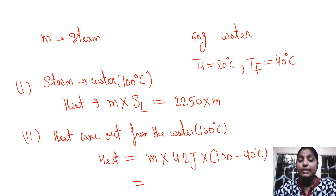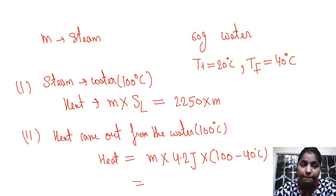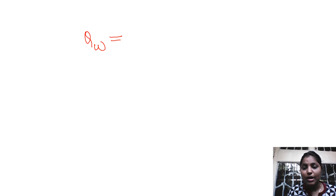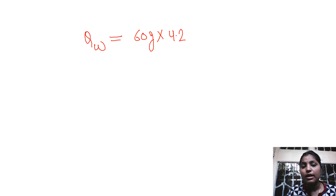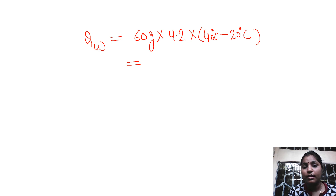Now we will calculate the heat absorbed by the water, represented as Q_w. The heat absorbed by the water: mass of water is 60 grams, specific heat of water is 4.2 joules, initial temperature is 20 degrees centigrade, and final temperature is 40 degrees centigrade. So this comes out to 5040 joules.